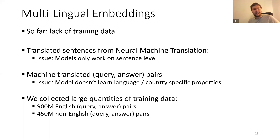However, there has been previous work on multilingual embeddings, but a big challenge was the lack of training data. What people did before was use translated sentences from the neural machine translation community to train or align models — English models — on this data. But here we see that models only work well at the sentence level.